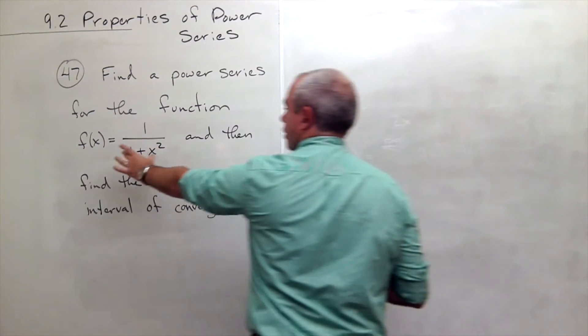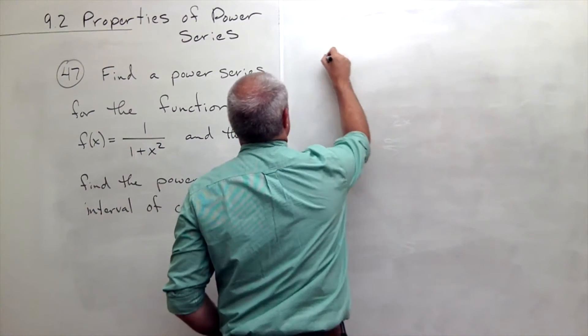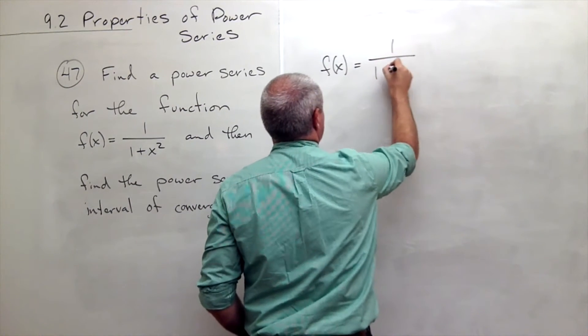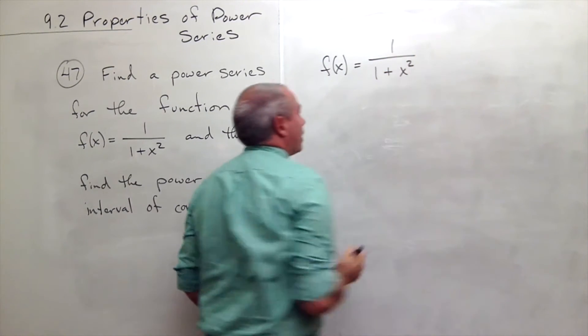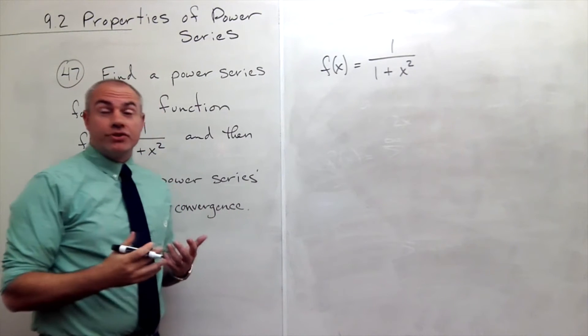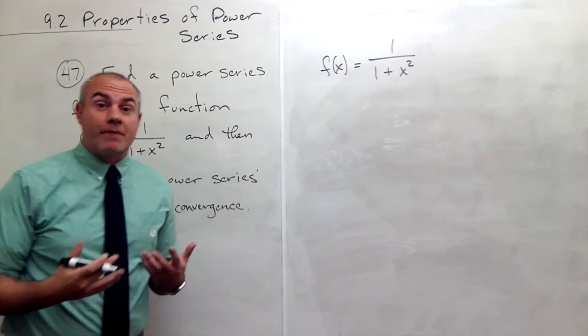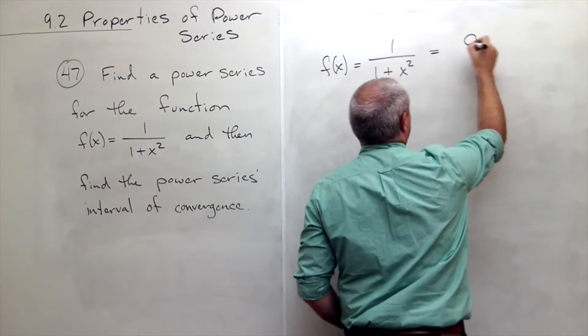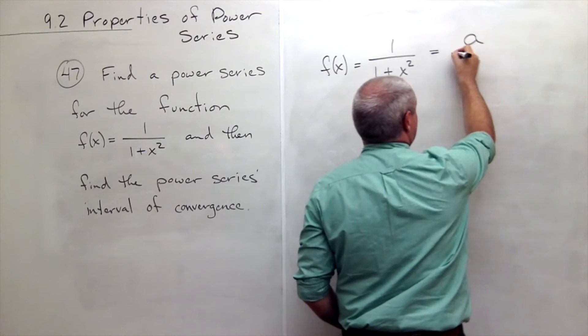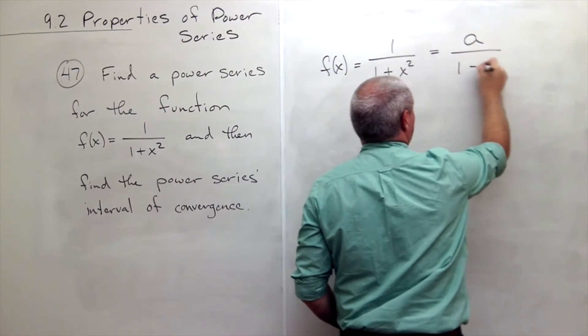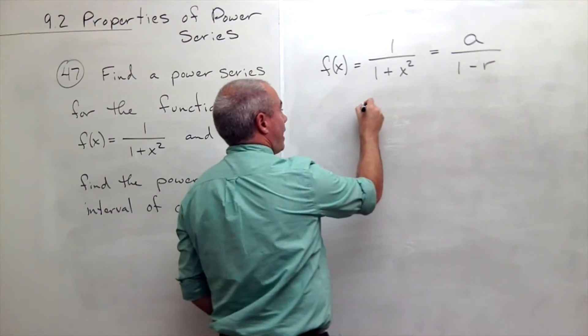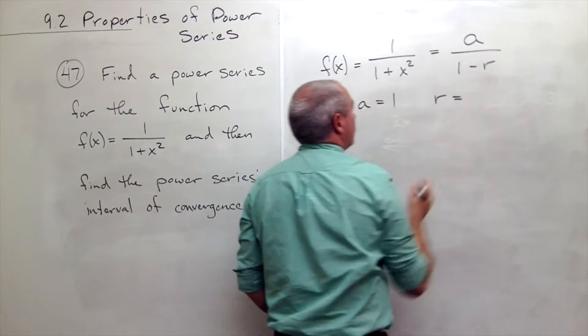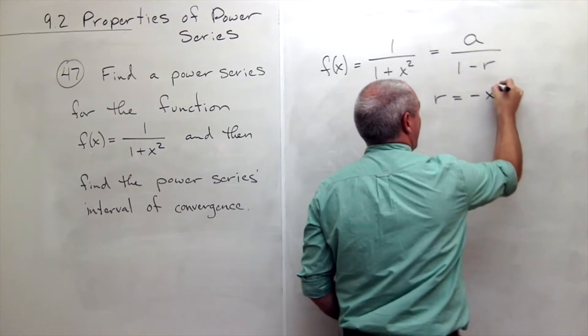So first of all, we're starting with this function f(x) and it is equal to 1/(1+x²). And I see this is very much like a geometric series form. Remember a geometric series when summed up is a/(1-r). So in this case, my a would be 1 and my r would be -x².